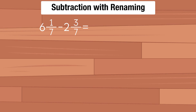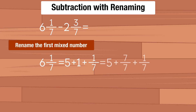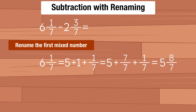So how do we subtract the mixed numbers? The first option is to rename the first mixed number. 6 and 1 seventh can be rewritten as 5 plus 1 plus 1 seventh. We know that 1 can be rewritten as 7 over 7, so we can write 5 plus 7 over 7 plus 1 seventh. Now we can add, and we get 5 and 8 sevenths. So instead of writing 6 and 1 seventh, we can plug in 5 and 8 sevenths. Now we can subtract, and we get 3 and 5 sevenths as the final answer.